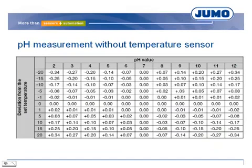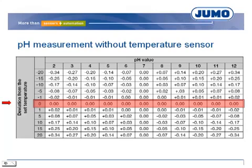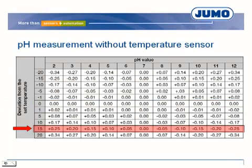With this chart it can be decided whether a temperature measurement is necessary. In the example, no temperature sensor is used and a fixed temperature is defined. If the temperature of the solution corresponds to the defined temperature, the pH value will be determined without deviation. For example, if a fixed temperature of 20°C is defined in the transmitter and the current temperature is 35°C, the deviation is plus 15 Kelvin. At pH 5, the transmitter determines a pH value which is 0.1 pH too high.